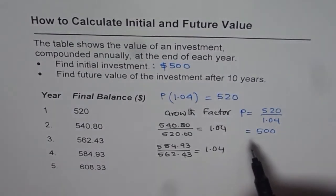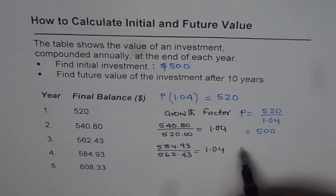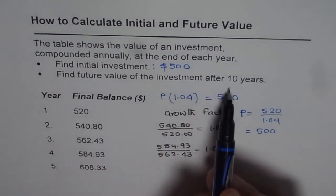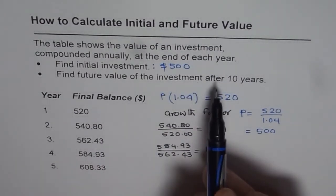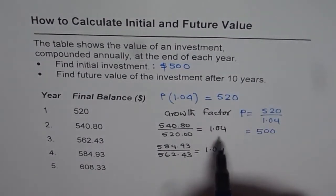So by multiplying we get the next year's value and by dividing we get previous year's value. Well that's the trick. Now how do you find the future value? Future value is a value after some years. That means we are going to multiply by this factor.